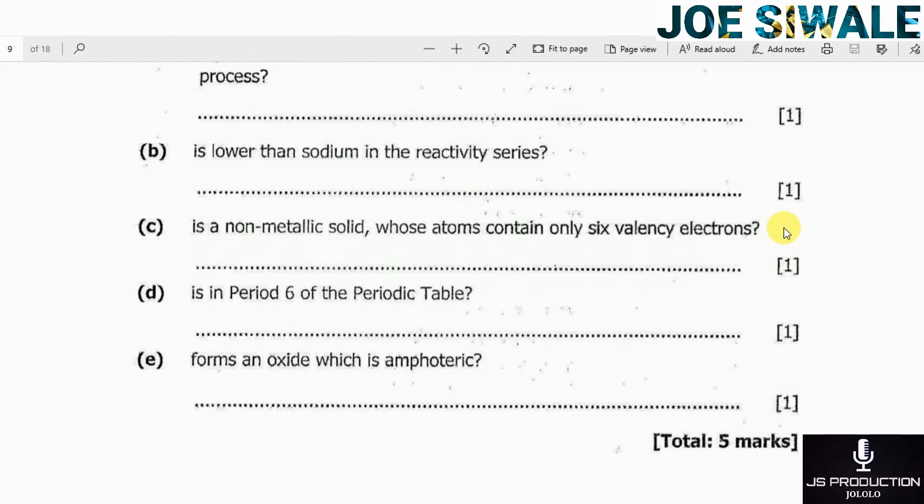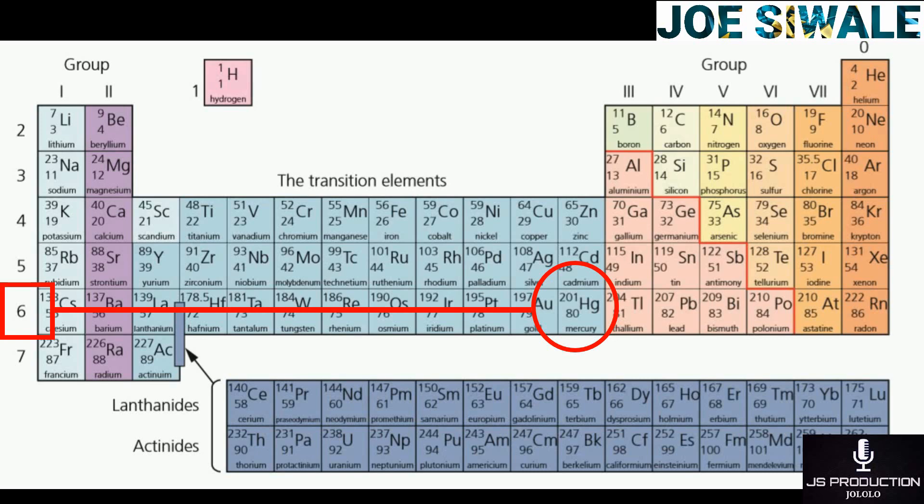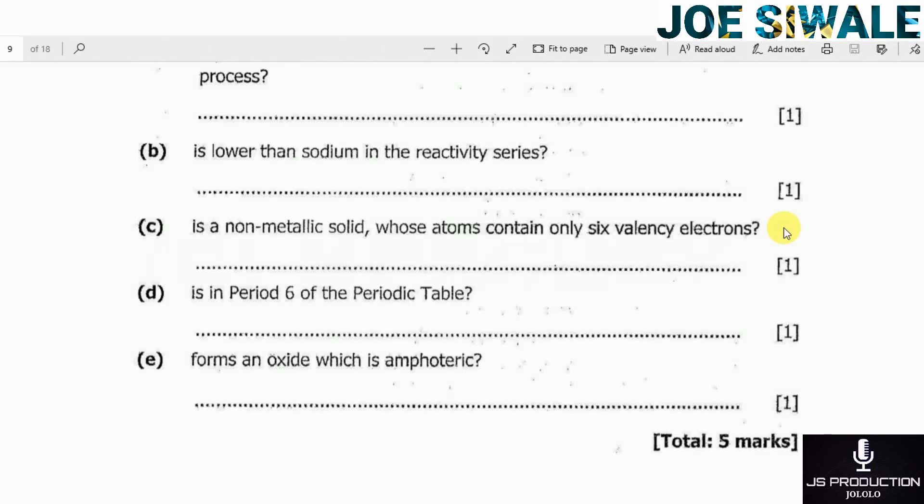Part D: is in period 6 of the periodic table? The element that is in period 6 of the periodic table is mercury.